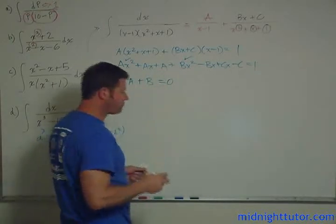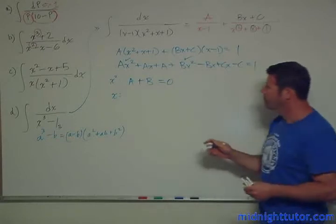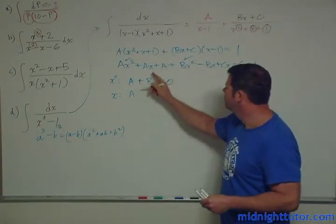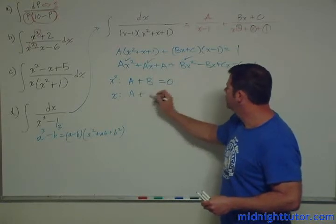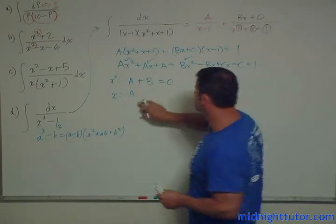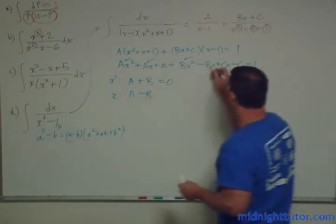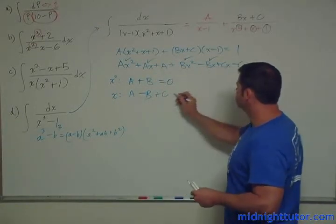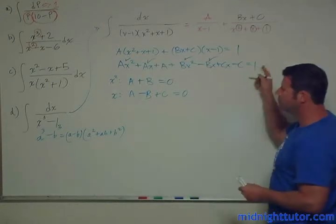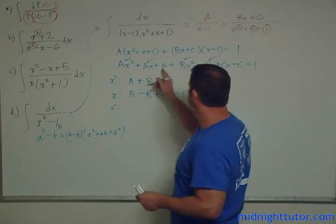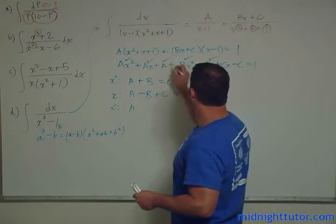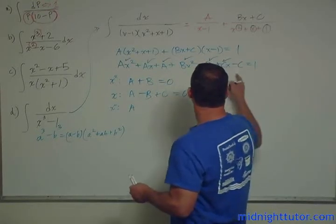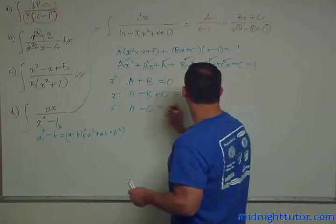Expanding: Ax squared plus Ax plus A plus Bx squared minus Bx plus Cx minus C equals 1. Collecting x squared terms: A plus B equals 0, since there's no x squared term on the right. Collecting x terms: A minus B plus C equals 0, since there's no x term on the right. Collecting x to the 0 terms: A minus C equals 1.